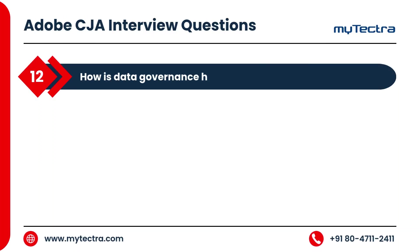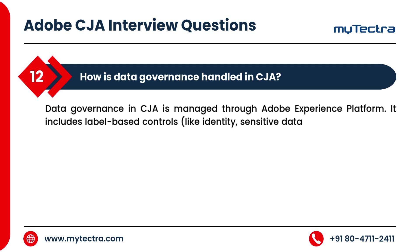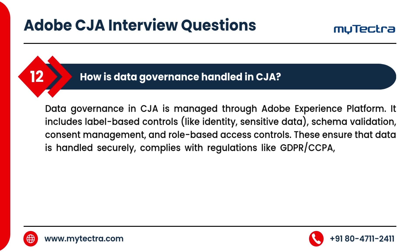How is data governance handled in CJA? Data governance in CJA is managed through Adobe Experience Platform. It includes label-based controls like identity, sensitive data, schema validation, consent management, and role-based access controls. These ensure that data is handled securely, complies with regulations like GDPR and CCPA, and restricts unauthorized access or use in downstream applications.